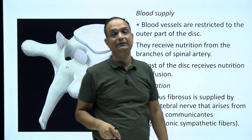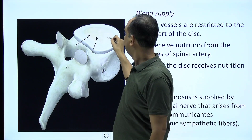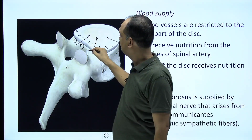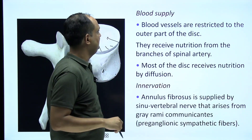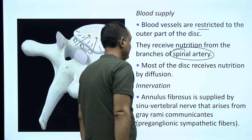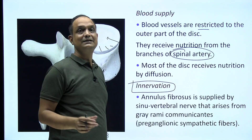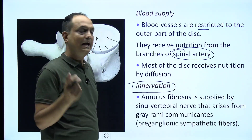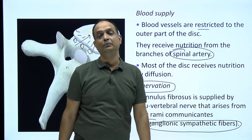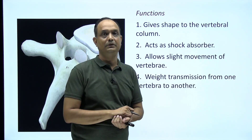The intervertebral disc mainly receives nutrition by diffusion, but its peripheral part has blood vessels supplied by the surrounding spinal arteries. Regarding innervation, the annulus fibrosus is supplied by the autonomic nervous system and receives pre-ganglionic sympathetic fibers arising from the gray rami communicantes.